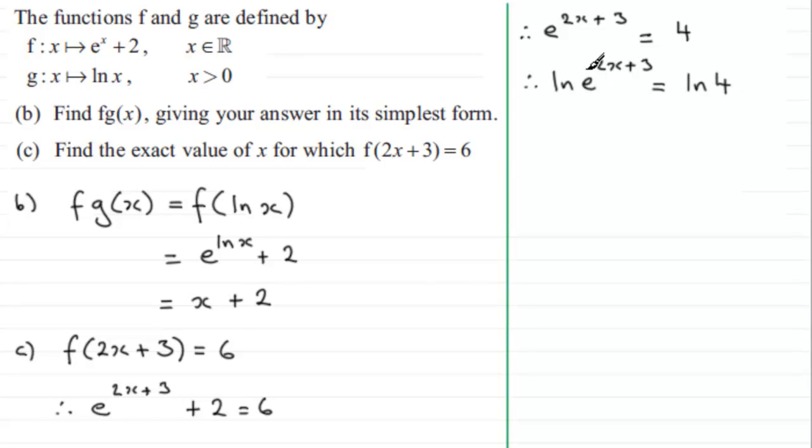And by the power rule of logs, natural logs in this case, we bring this power out the front. Okay, a rule that you should be familiar with. So we've got 2x plus 3 multiplied by the natural log of e equals the natural log of 4.